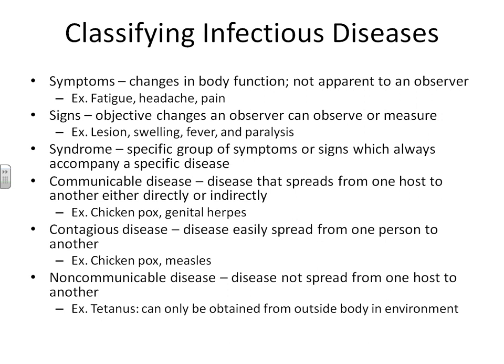For a disease to be contagious, it must be nearly guaranteed that proximity to an infected person means you'll get it. Genital herpes is communicable but not contagious — there's a chance but no guarantee you'll get it. A non-communicable disease is one you cannot get from another person. Tetanus, for example — even if I have it, you cannot get it from me. You can only get tetanus from having an endospore from the dirt injected into your skin, like stepping on glass or a rusty nail.